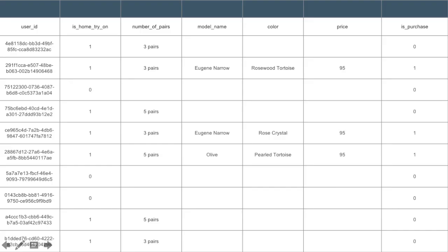So when we build this table out, we see that Eugene Narrow is actually one of the more frequent models that was purchased, and $95 seems to be a common price.